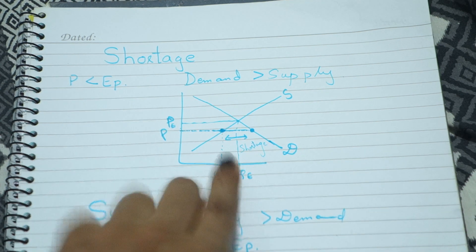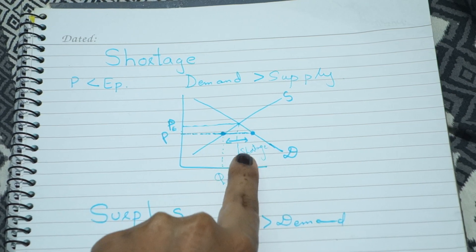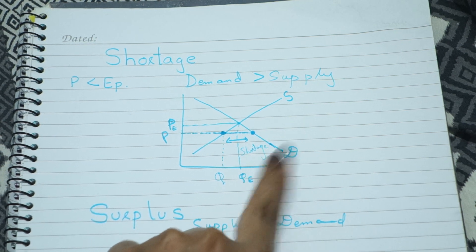Toh kya hoga? Aapko is ko graph me plot karna hai. Agar is tarah ki situation banti hai toh aapko pata honi chahiye ki yaha pe shortage hai products ki.